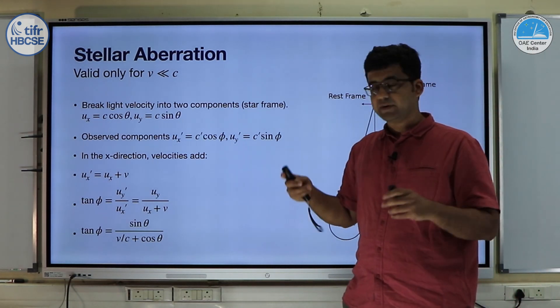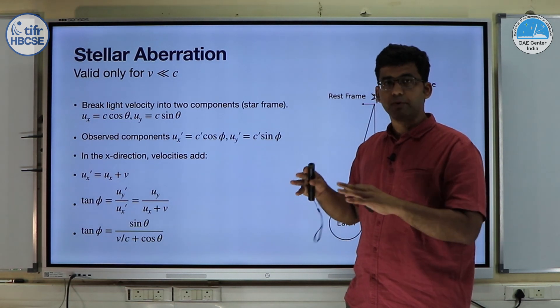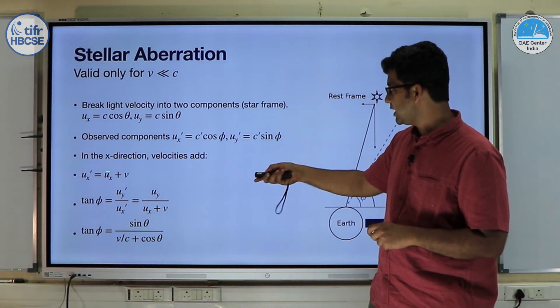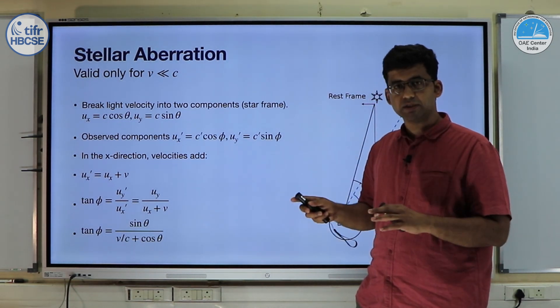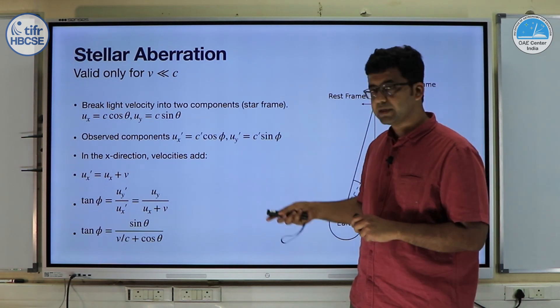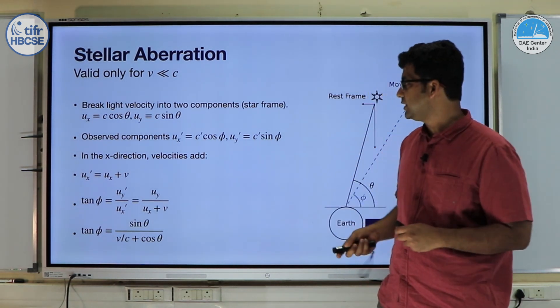Now we know from relativity that the speed of light is same in all frames, but in this case because we want to add up the velocities we have denoted this as c'. Of course c' is equal to c.